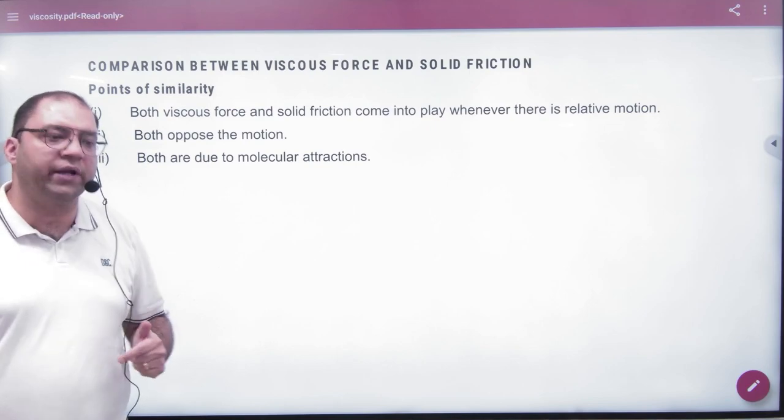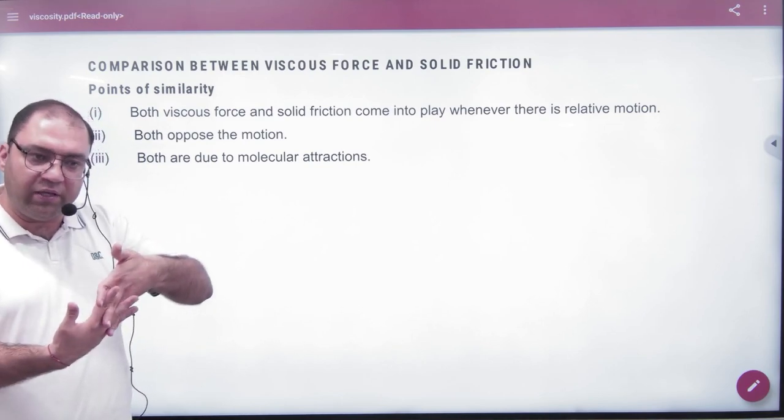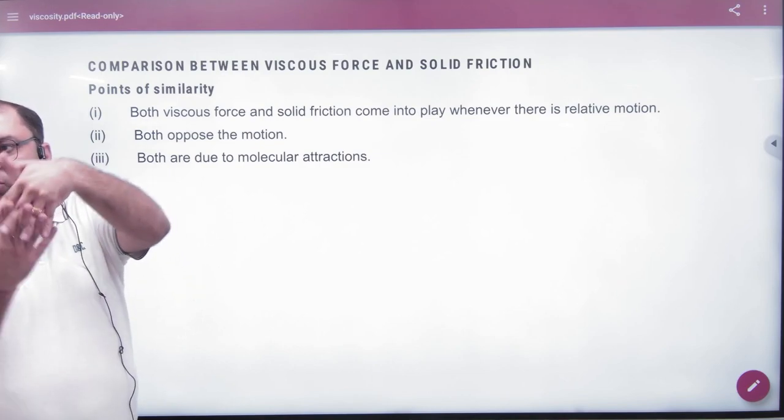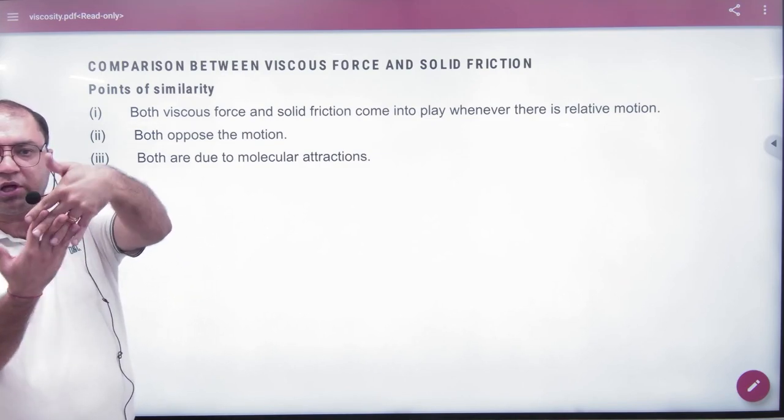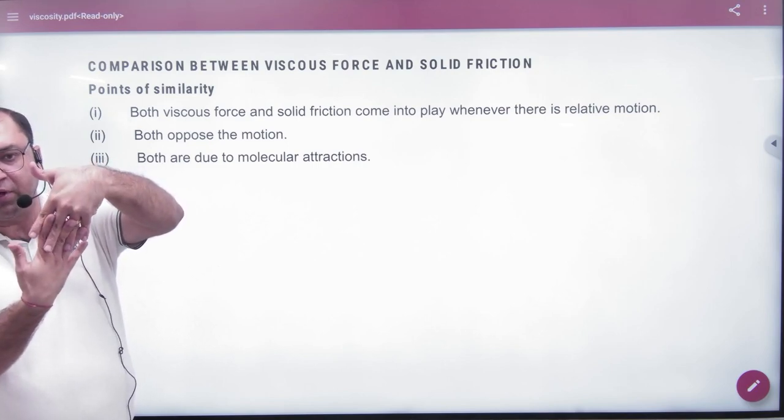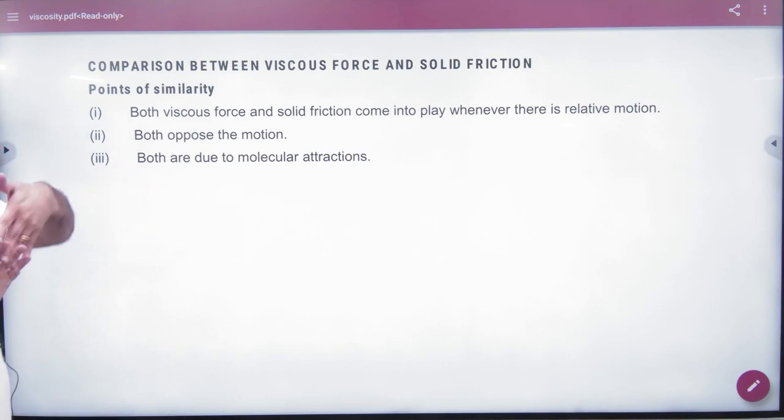Both are due to molecular interaction. There are bonds in molecules. When the two layers move, one fast and one slow, because of relative motion, these forces exist. We have to break these bonds - molecular interactions. We have to overcome them. So force of friction exists.